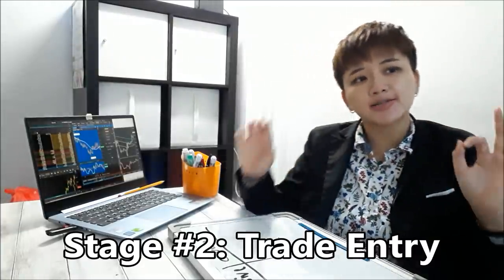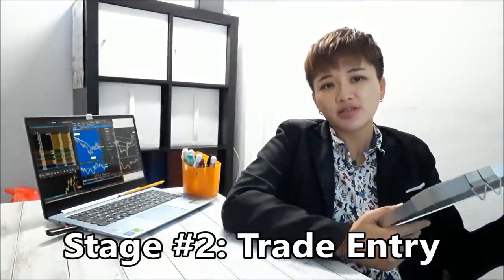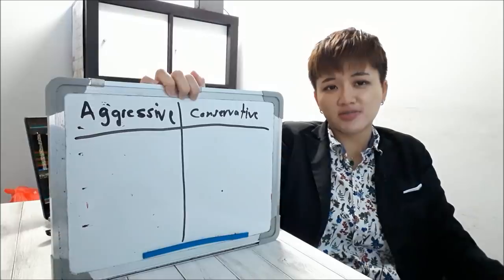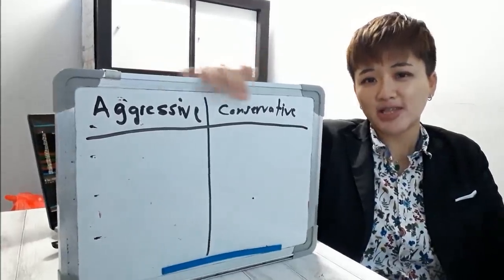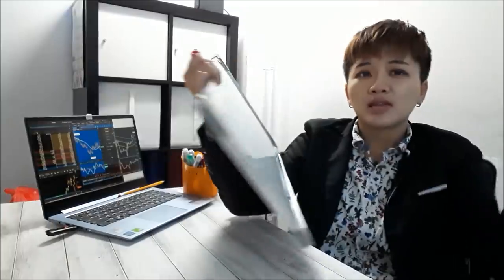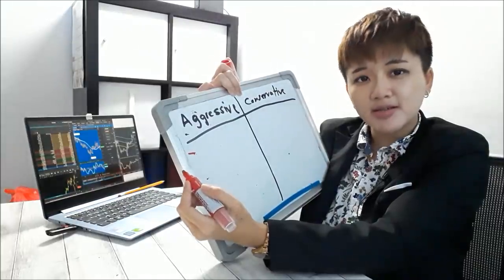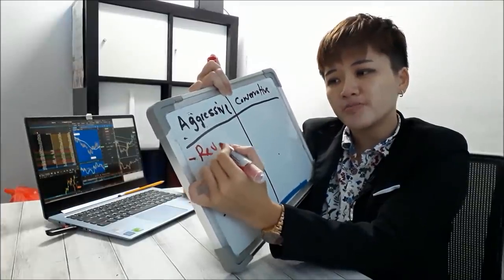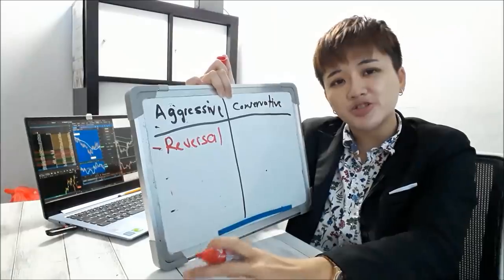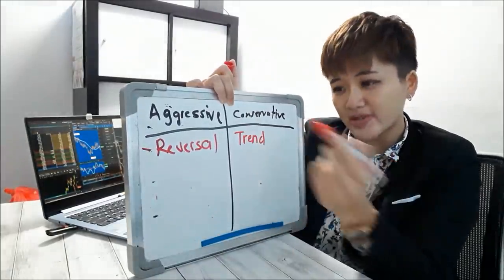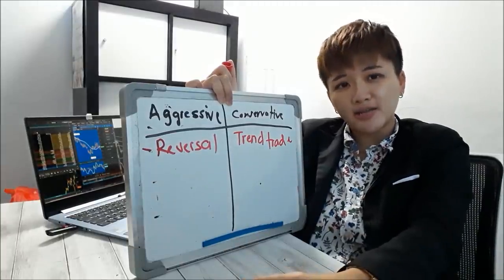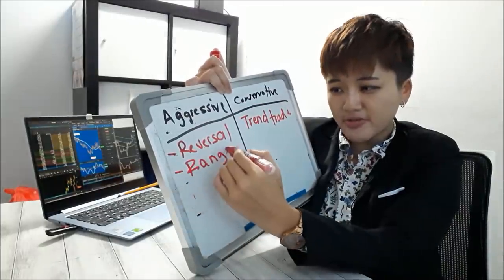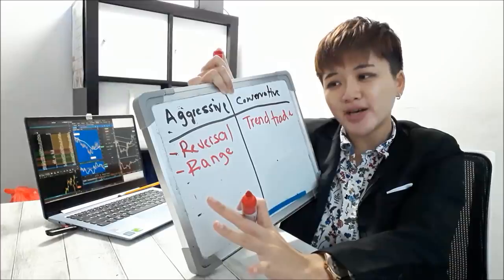How you enter a trade is very important because you gotta enter a trade in a way that suits your trading personality. Are you an aggressive trader or a conservative trader? If you're an aggressive trader, you would enter right at the end of a trend to trade reversals — meaning you try to pick tops and bottoms. But if you're a conservative trader, you trade along with the trend, somewhere in between.